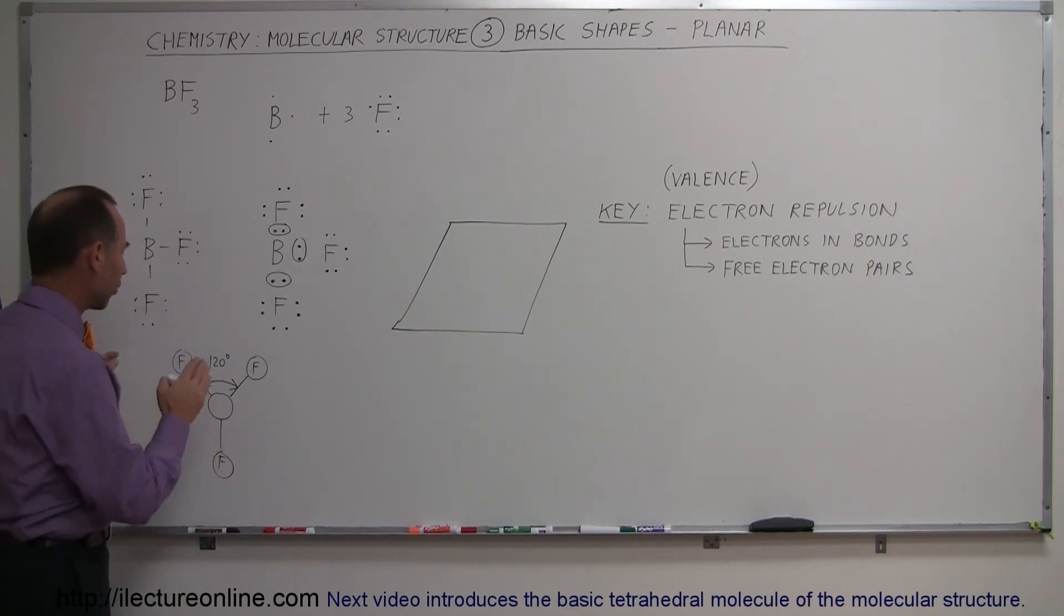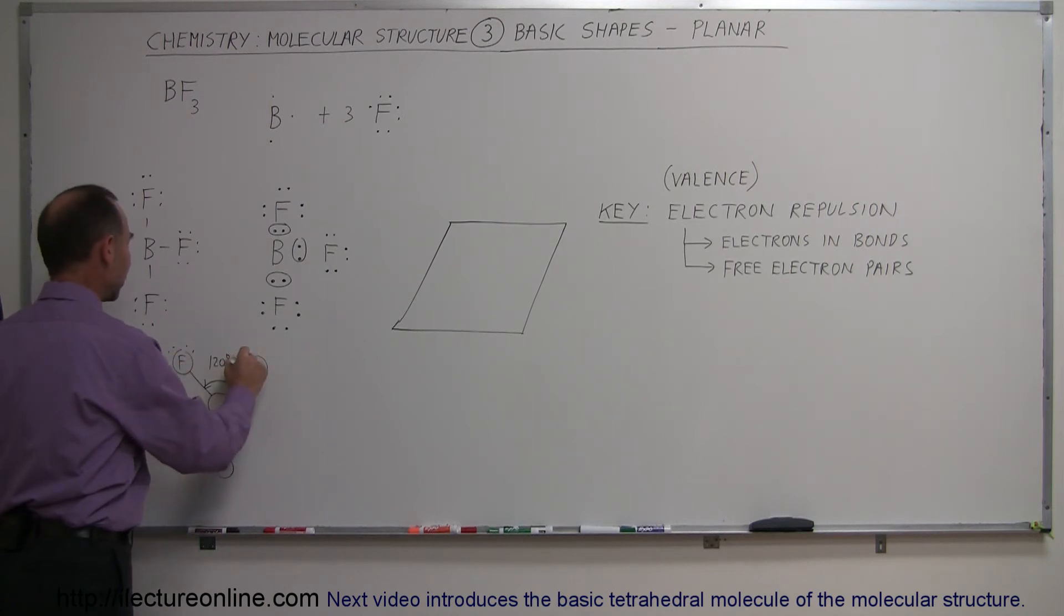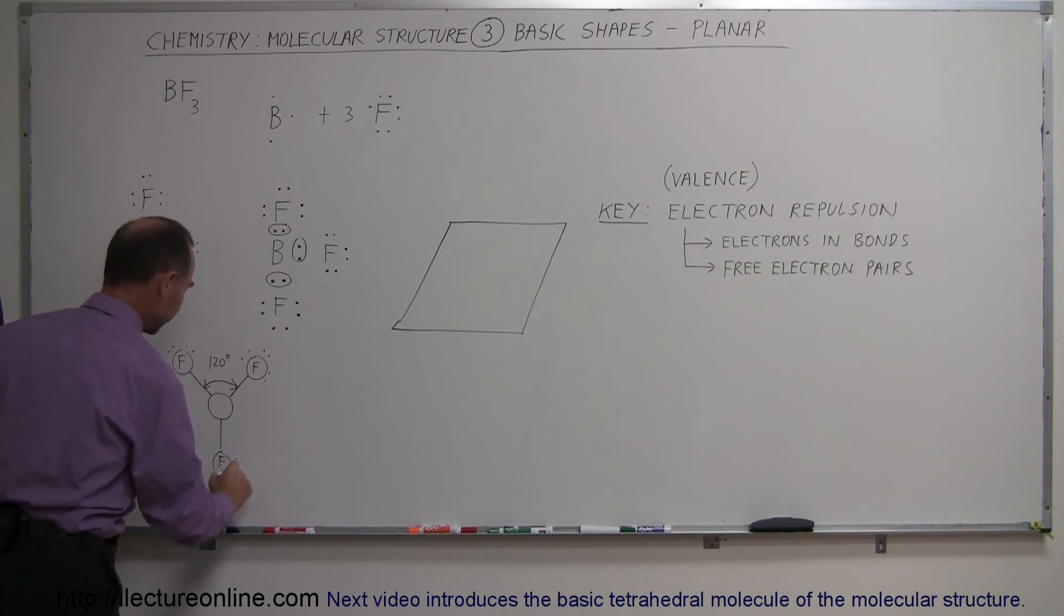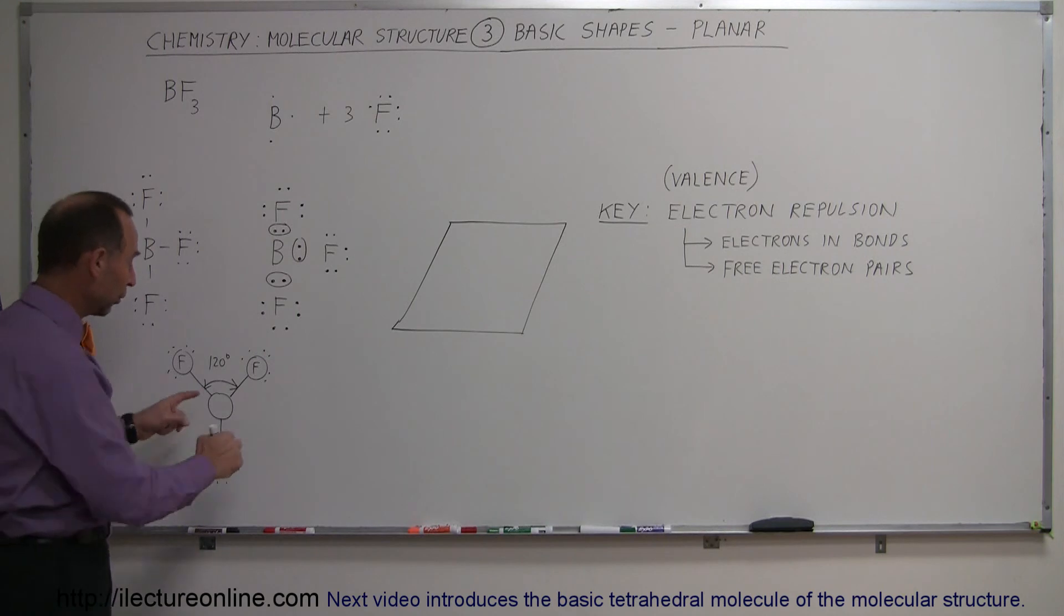So why would it be that they're actually in a planar format? Don't forget that they also have these free electrons. Each fluorine has three free electron pairs, and of course they repel each other as well. Not only do the bonds repel each other, everything wants to be as far away from each other as possible.